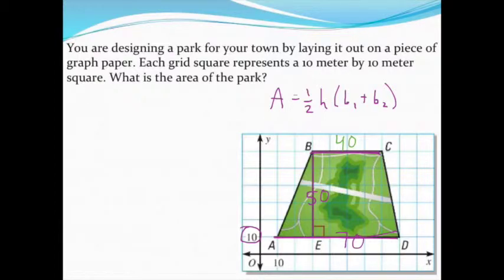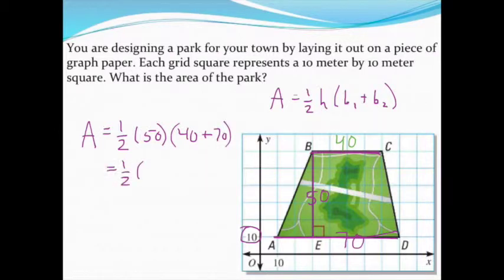Using those values, I can find the area of this park. It's equal to one-half times the height, which I counted to be 50, times the sum of the two bases, which is 40 and 70. Again, I would simplify what's in the parentheses first before reaching for my calculator.